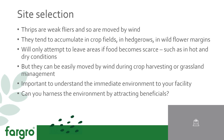Now that we know a little bit more about what we're dealing with, the first consideration for cultural controls has to be site selection. You ideally want to minimise the amount of pests coming in. As mentioned, thrips are weak flyers and so they're moved by wind. They tend to accumulate in crop fields, hedgerows and wildflower margins, and will only attempt to leave the area if food becomes scarce — such as in hot and dry conditions. They can be easily moved by wind during crop harvesting or grassland management. So it's very important to understand the immediate environment of your facility. If it's close to big fields of wheat, barley or grassland, then you will be more at risk of thrips entering.